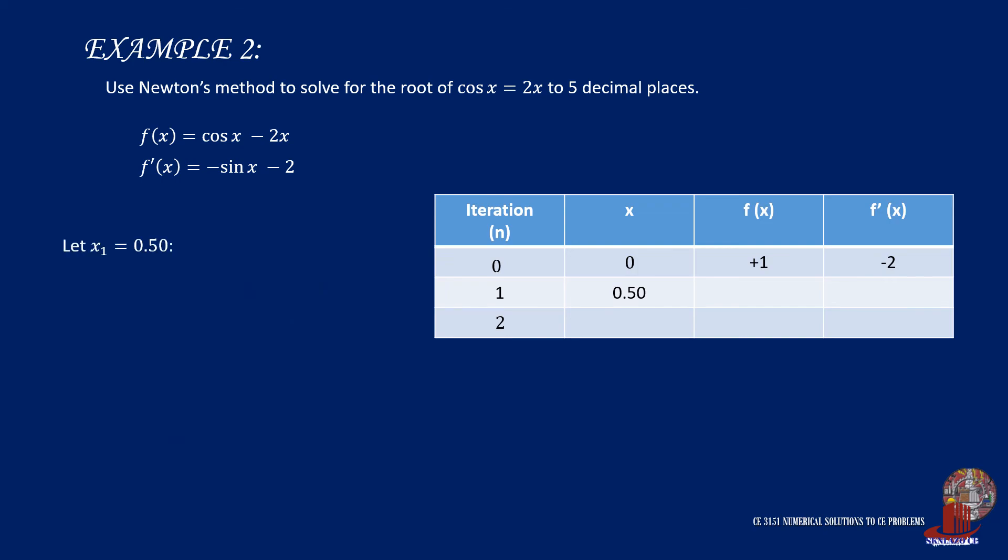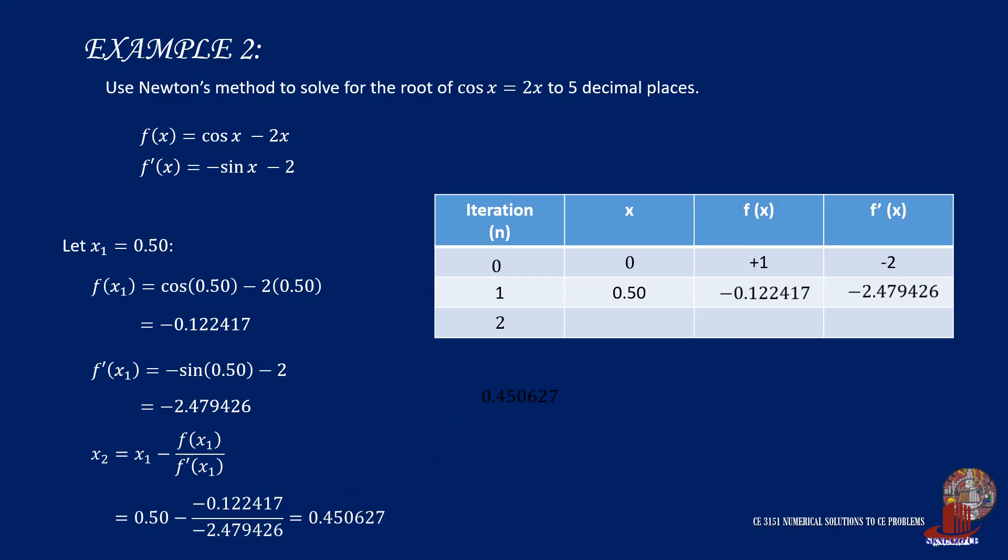Now, using x sub 1 of 0.5 into the two functions, f of x is computed as negative 0.122417. And f' of x is taken as negative 2.479426. These values will be used to find x sub 3, which would turn out to be 0.450627.